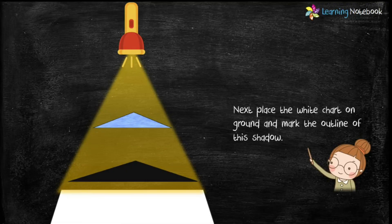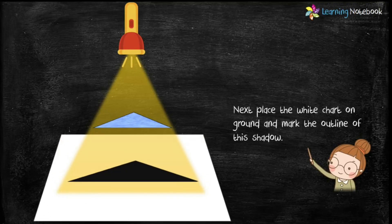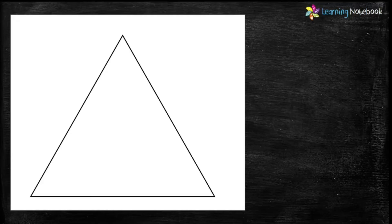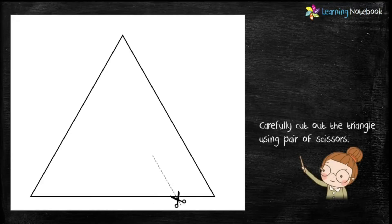Next students, place the white chart on the ground and mark the outline of this shadow. Students, this is the outline of the shadow of the triangle.